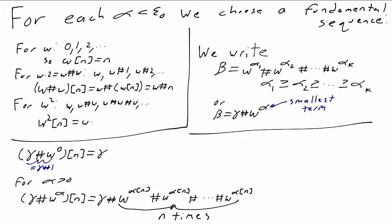For example, if we want to find omega to the omega bracket n. In this case, this is 0 plus omega to the omega. Gamma is 0 and alpha is omega, so this is omega to the omega bracket n added together n times.